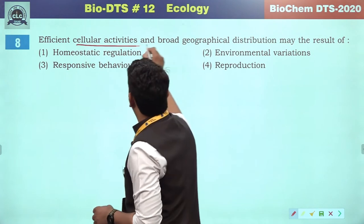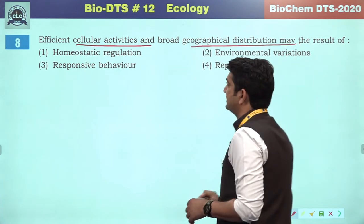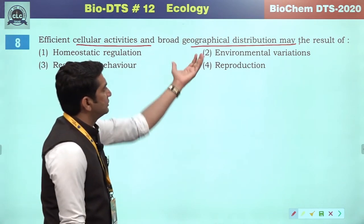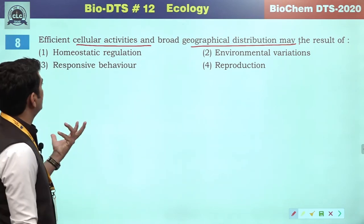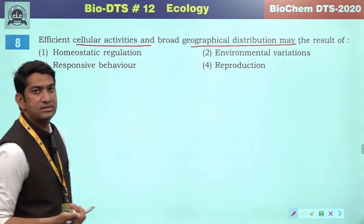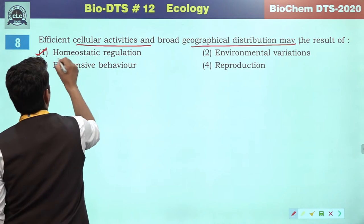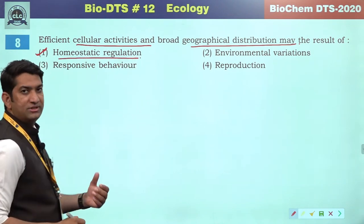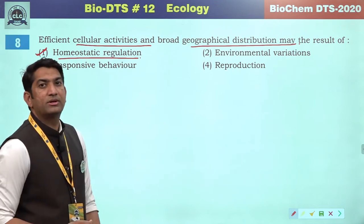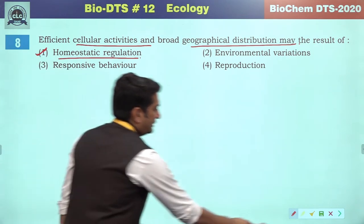Efficient cellular activities and broad geographical distribution — if a living organism is a homeostatic regulator, then its cellular activity will be efficient and definitely the geographical distribution will be broad. So the correct answer will be the first option.